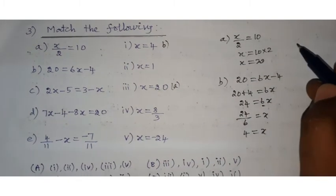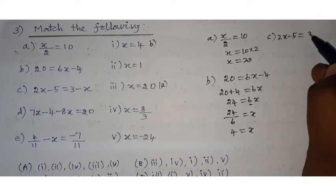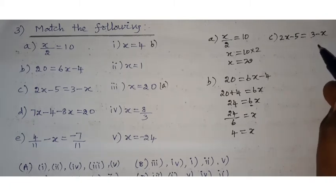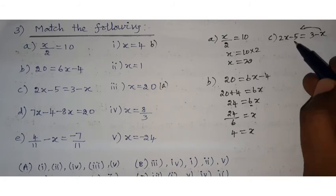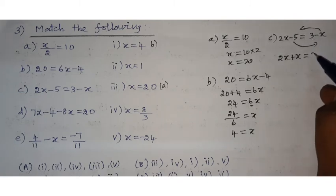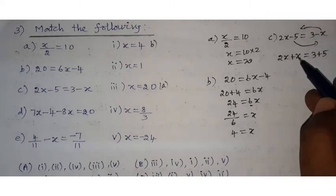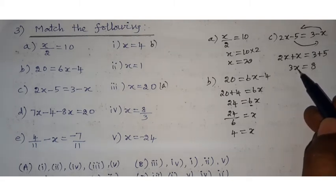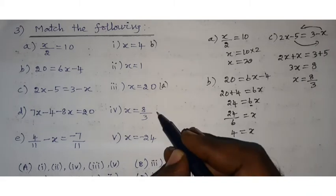Option C: 2x minus 5 equals 3 minus x. Bring x terms to one side and numbers to the other. 2x plus x on the left gives 3x, and minus 5 goes to the right as plus 5, so 3x equals 3 plus 5 equals 8. Therefore x equals 8 by 3.